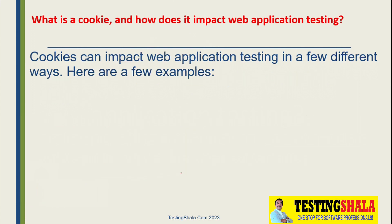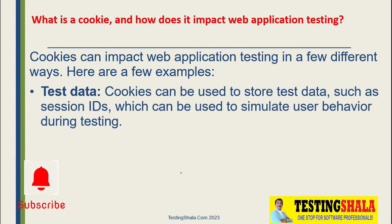Because we use cookies, it is also having a lot of impact with web application testing, because cookies are very crucial and important. There is an impact due to cookies as well, and how we want to avoid that impact we will discuss now. The first one is test data — normally cookies can be used to store test data such as session IDs.